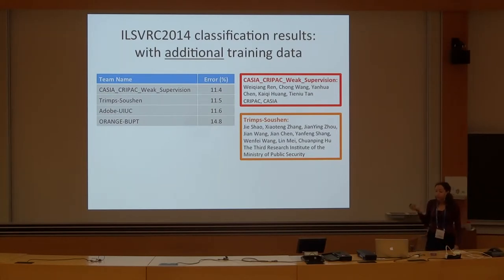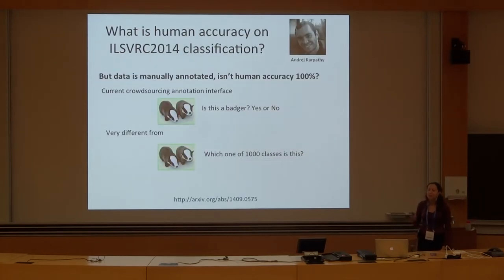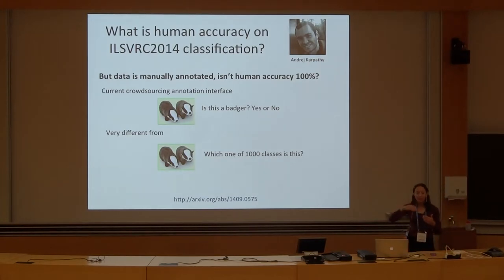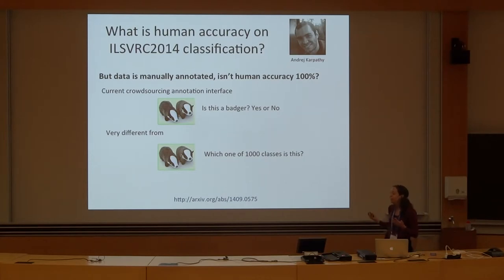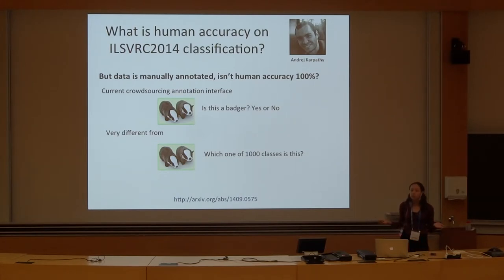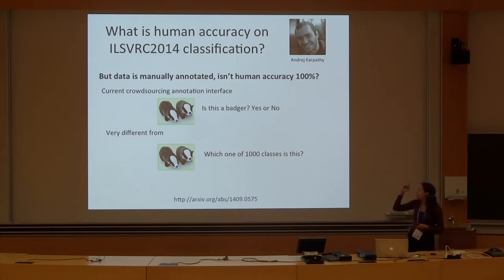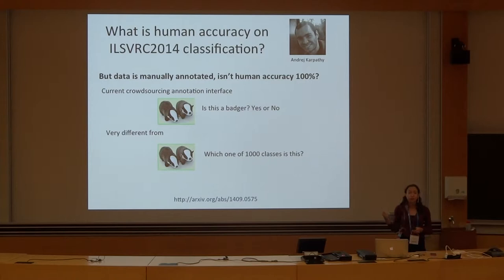Now that we're talking about the classification task, one of the really interesting questions to ask is: accuracy is high, error is getting very low — only 6% of the data. And the question is, what is human accuracy? Can humans do better? Are humans at about 6%? This was a very interesting question that was actually asked by Andre Karpathy, who's a PhD student with Fei-Fei.